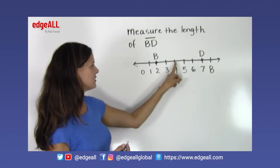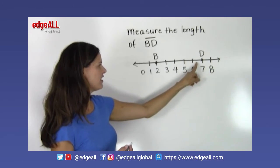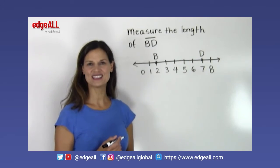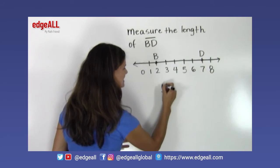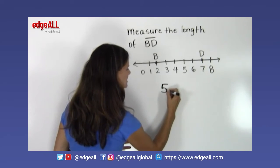1, 2, 3, 4, 5. And so you can see that the distance between B and D is a measurement of five spaces.